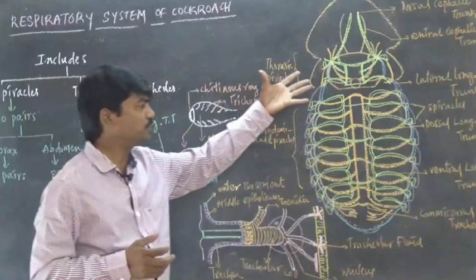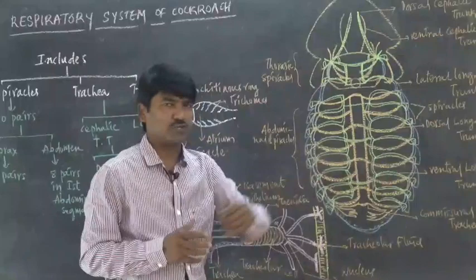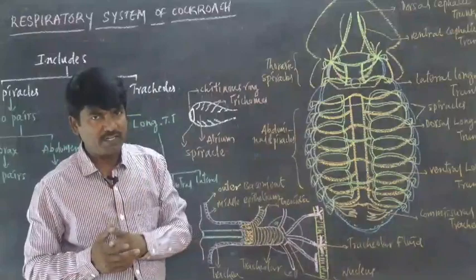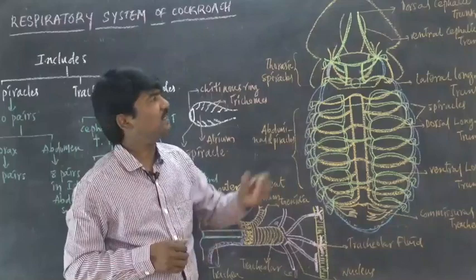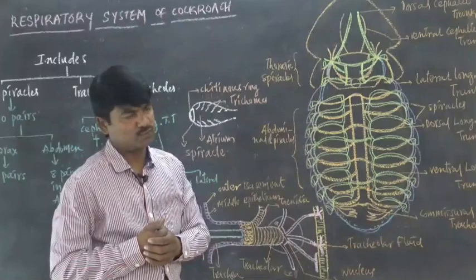The second component is the trachea. The body is composed of many tracheal trunks, which are basically of two types: cephalic tracheal trunks and longitudinal tracheal trunks. Cephalic tracheal trunks are present in the head region. They are divided into two types: dorsally arranged cephalic trunks and ventrally arranged cephalic trunks, with sub-branches expanding through the head region.